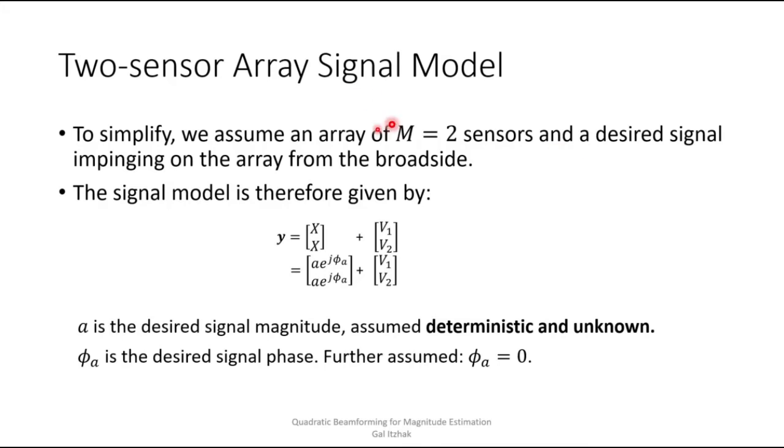Okay, so now let us formulate and focus on a sensor array of M equals two sensors. And as before, let's keep assuming that the desired signal is impinging on the array from the broadside. Then under these assumptions, the signal model is given by this formula, with A being the desired signal magnitude, which is assumed to be deterministic and unknown, and phi A is the desired signal phase, which is further assumed to be strictly zero.